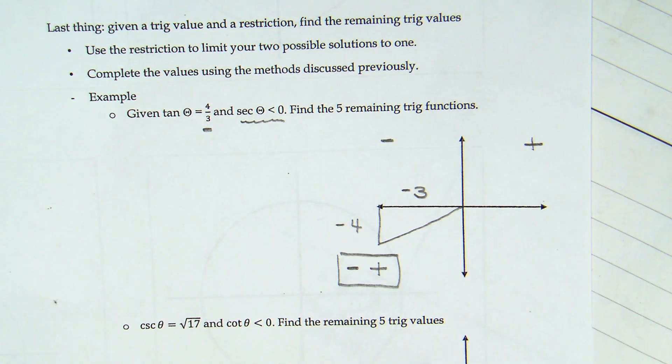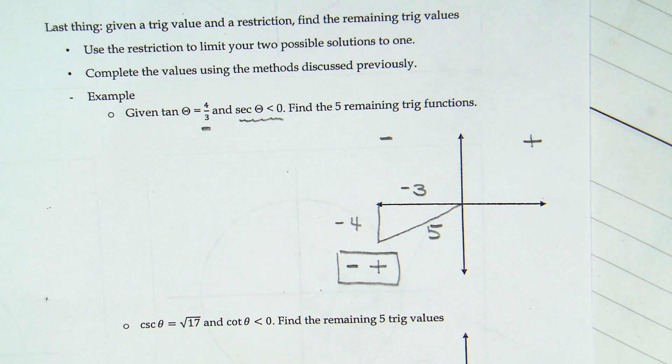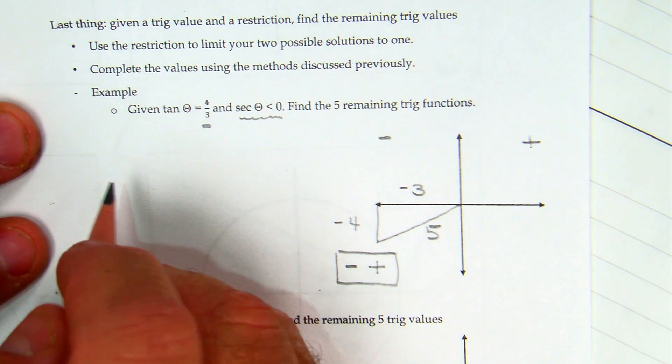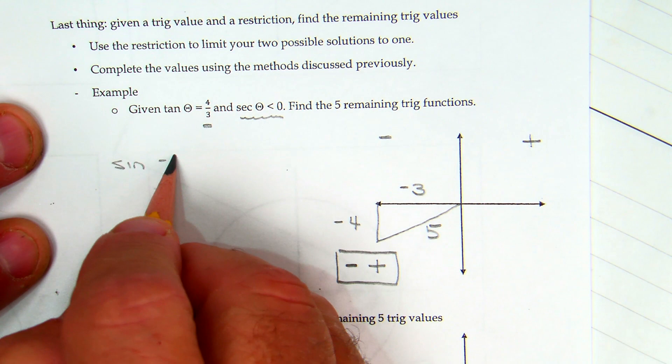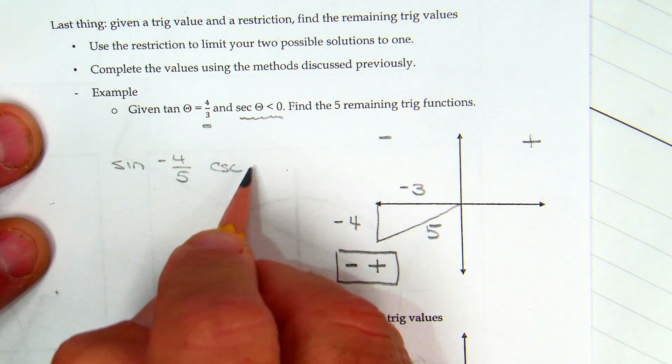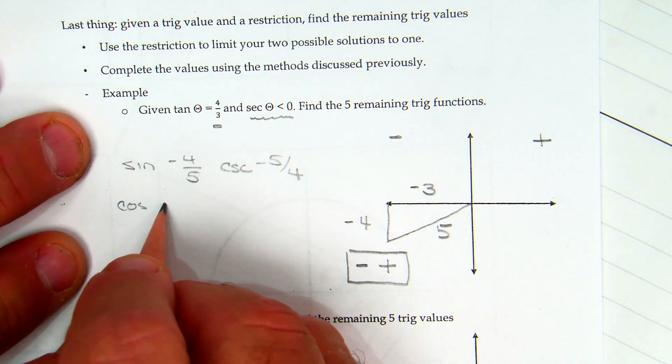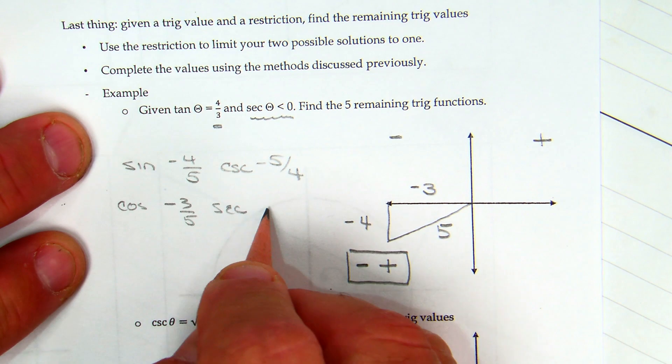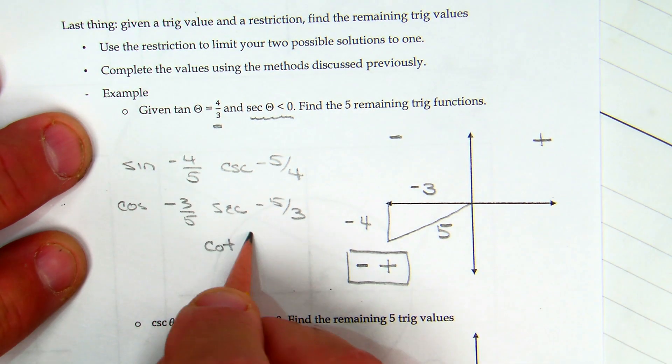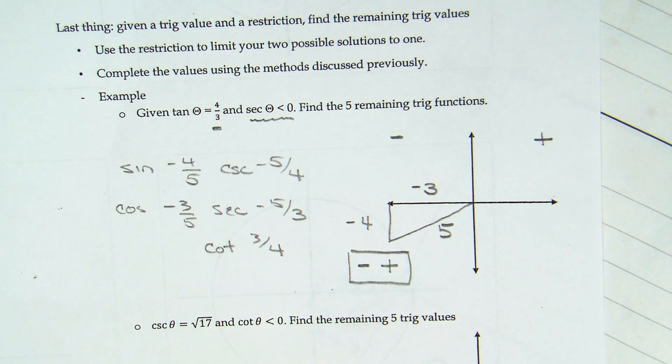However, when I use Pythagorean theorem, three squared plus four squared is five squared, and my hypotenuse is five. So, for example, the sine would be negative four over five, making my cosecant negative five over four. My cosine is negative three over five, making my secant negative five over three. And then my cotangent is just the flip of what they originally gave me.